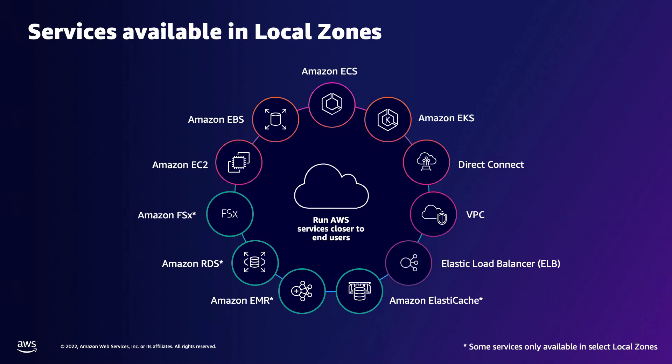Let's talk about the specific services available in Local Zones. Local Zones bring AWS services to more places with the same experience and benefits that developers are used to in regions. We locally support a lot of services including Amazon EC2, Amazon EBS, ECS, EKS, VPC, and Application Load Balancer. We also recently added Direct Connect support across multiple Local Zones in the US, enabling hybrid use cases both in the US and globally. We support multiple instance types including T3, C-series, R-series, and G4DN in these Local Zones.